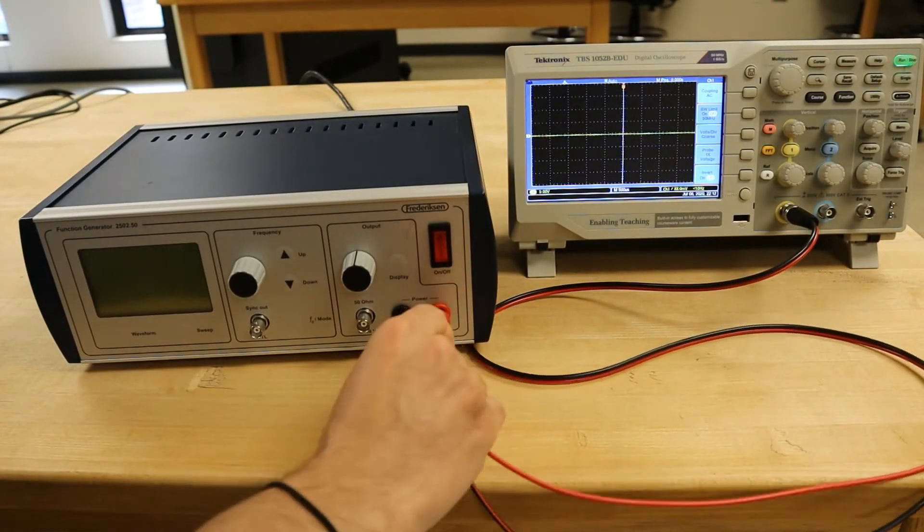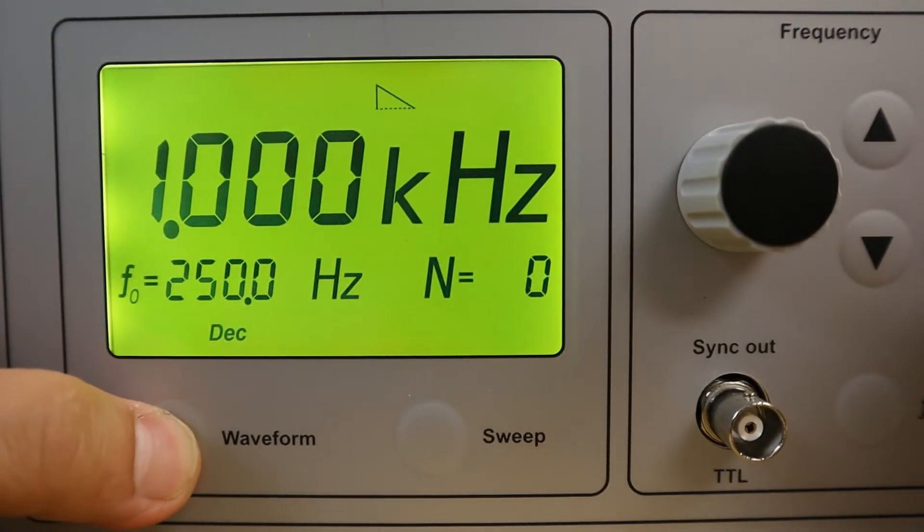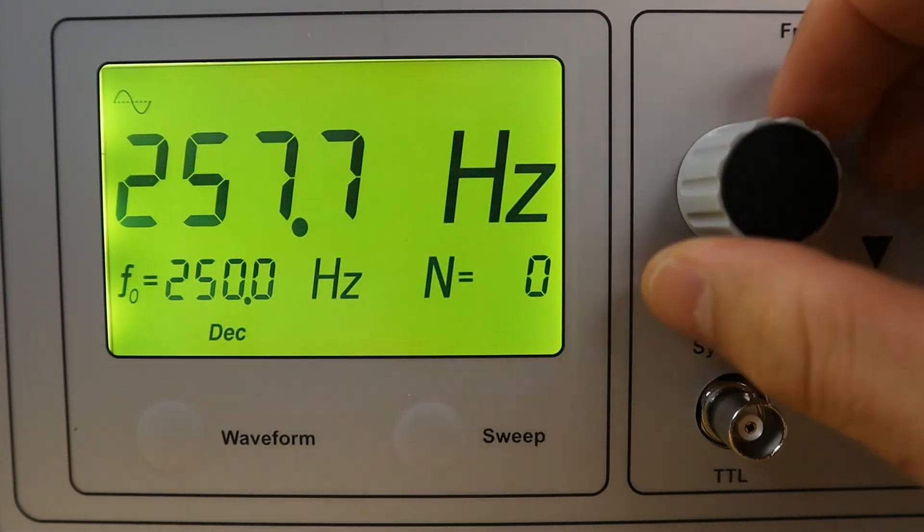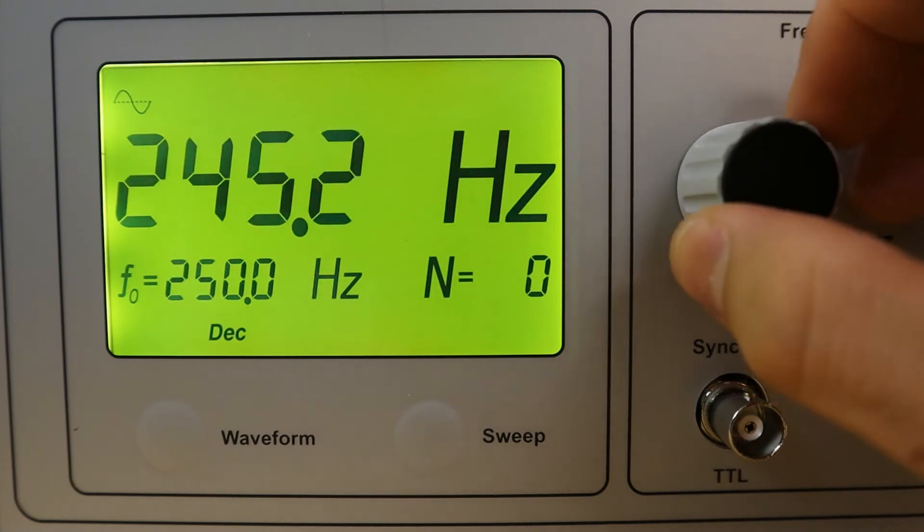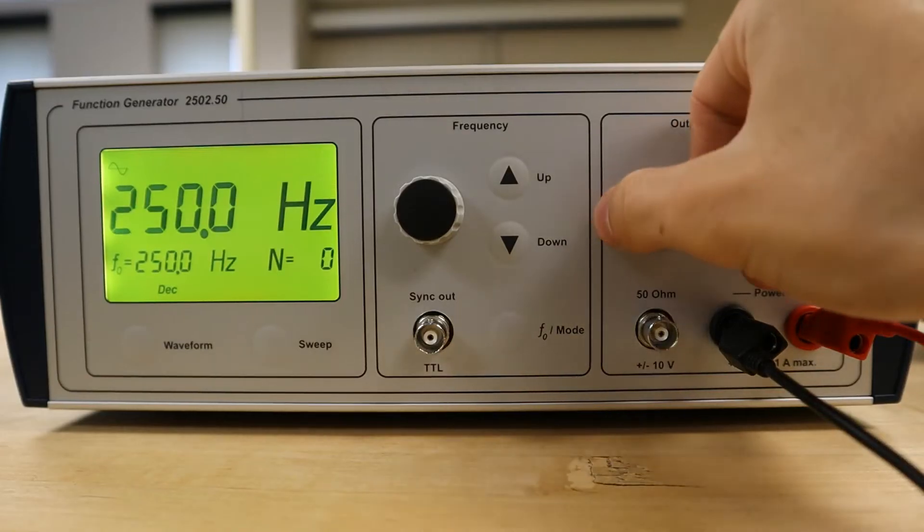Arbitrarily, we will set the function generator to produce a sinusoidal waveform with a frequency of 250 Hz, while the amplitude, we will leave somewhere around half the capacity of the generator.